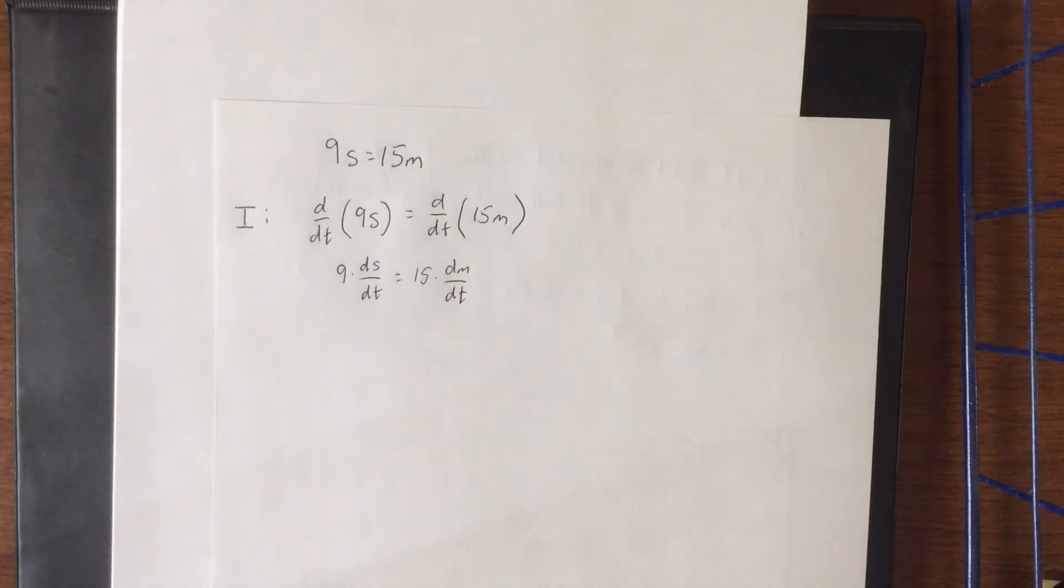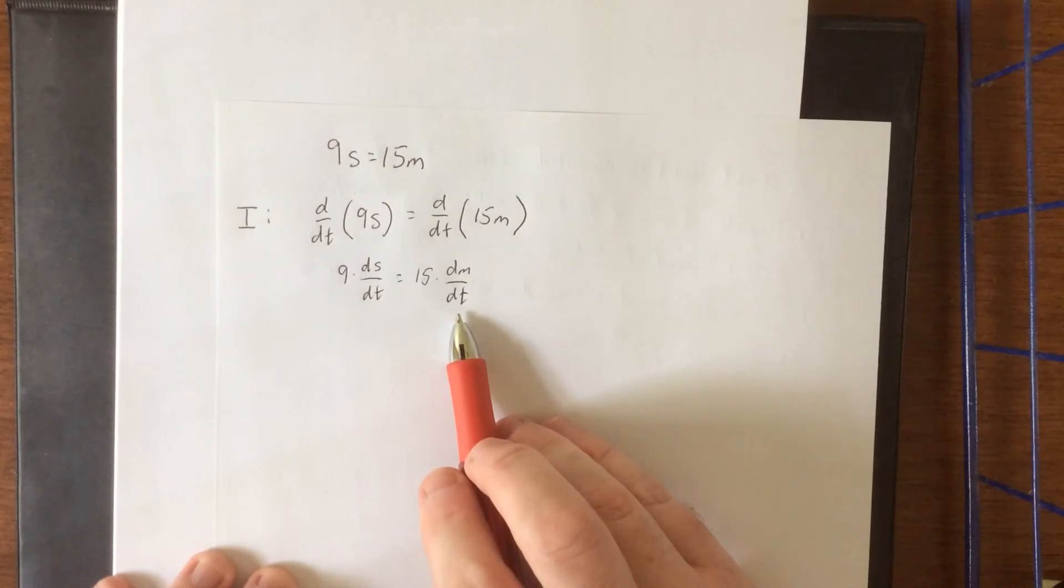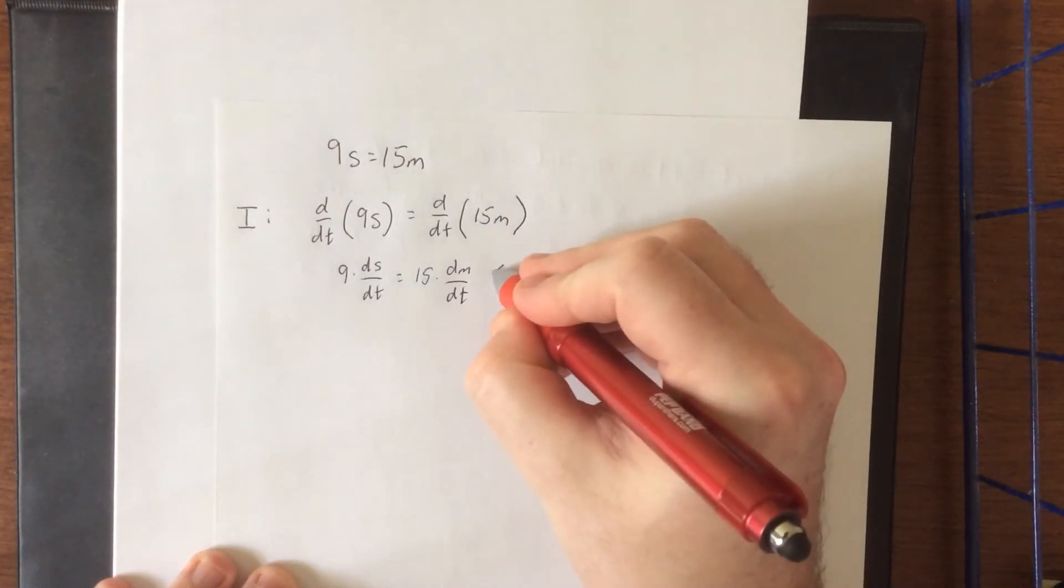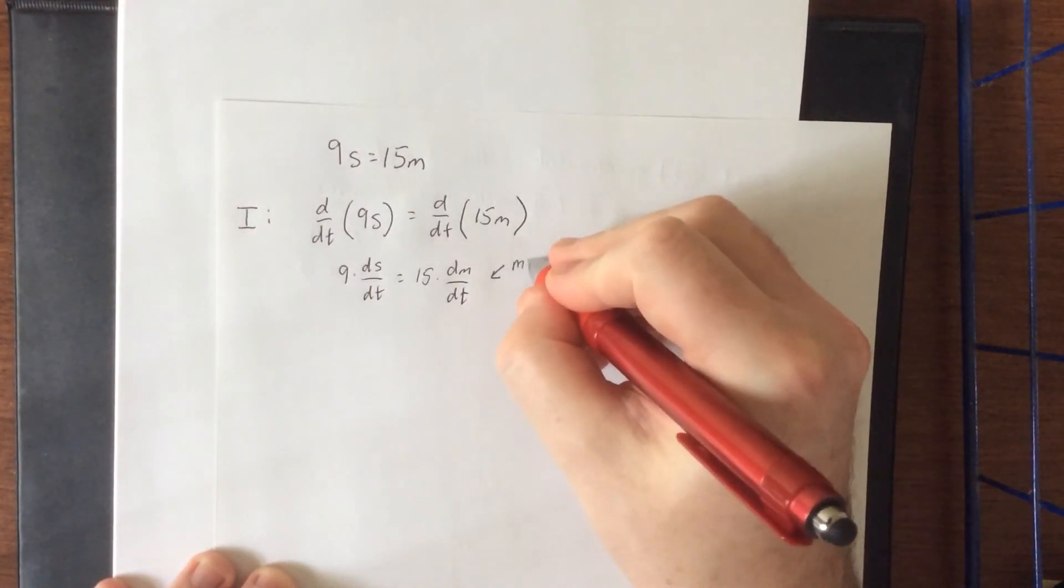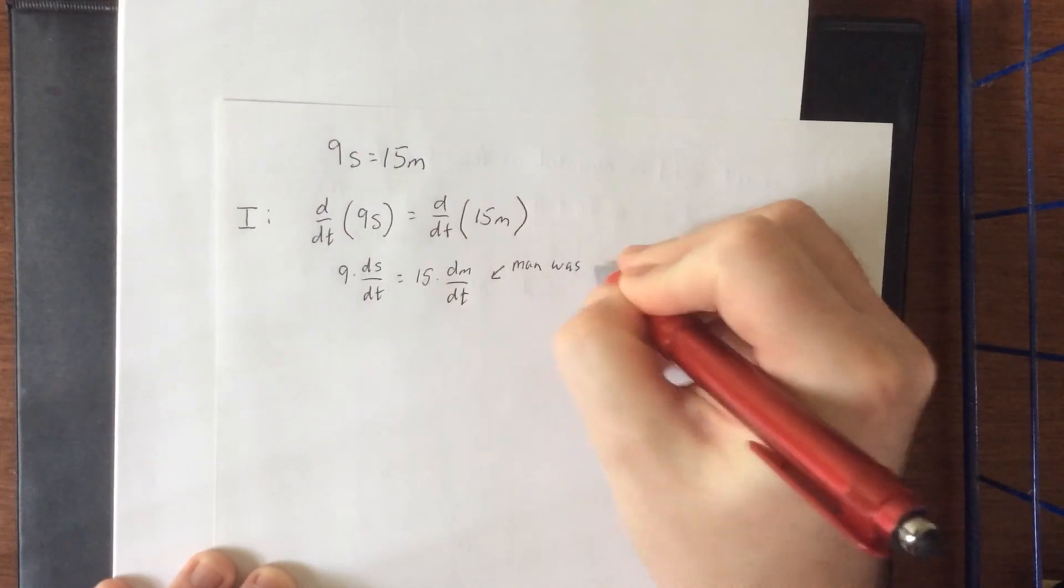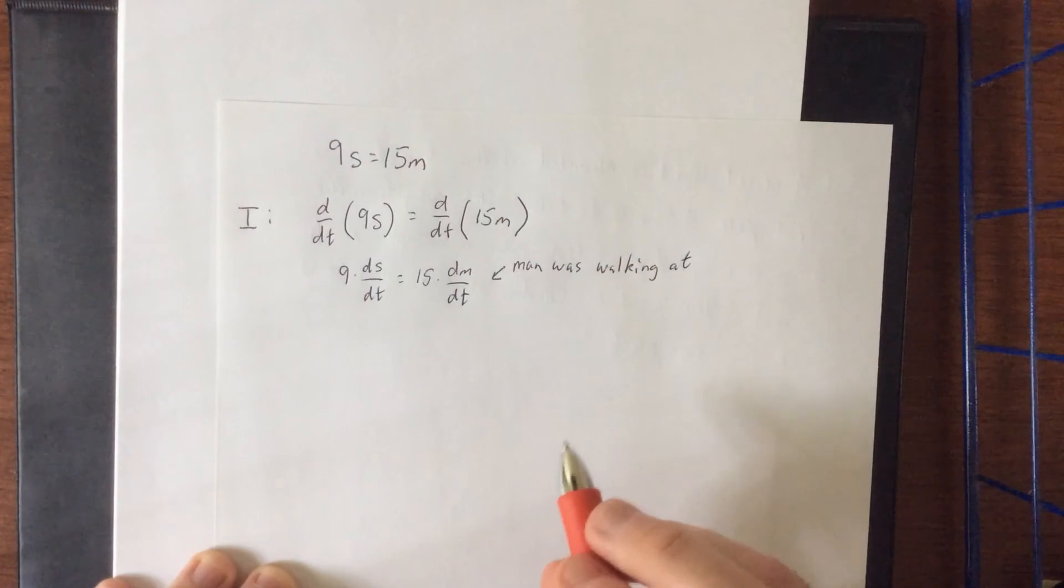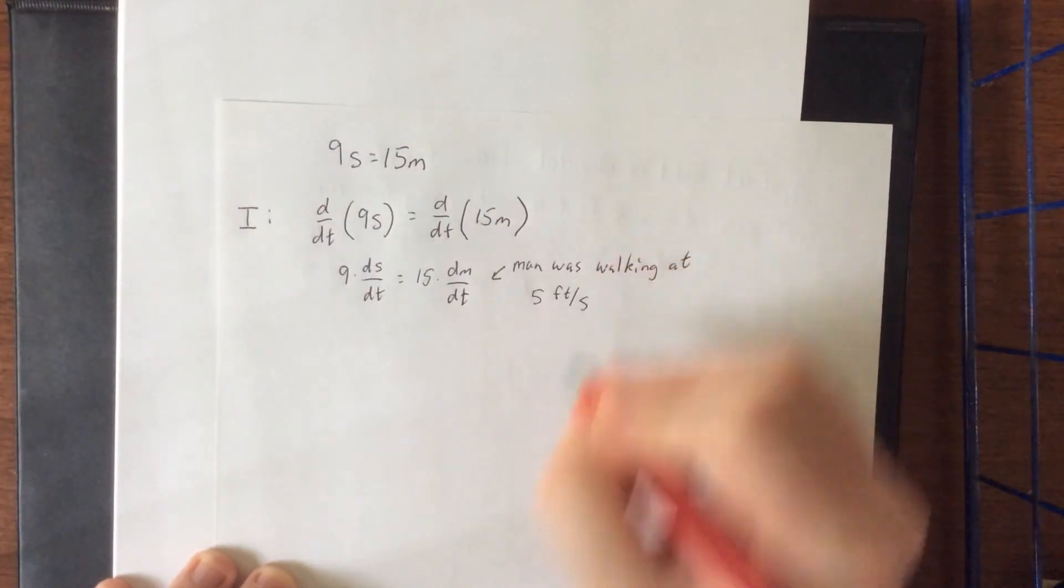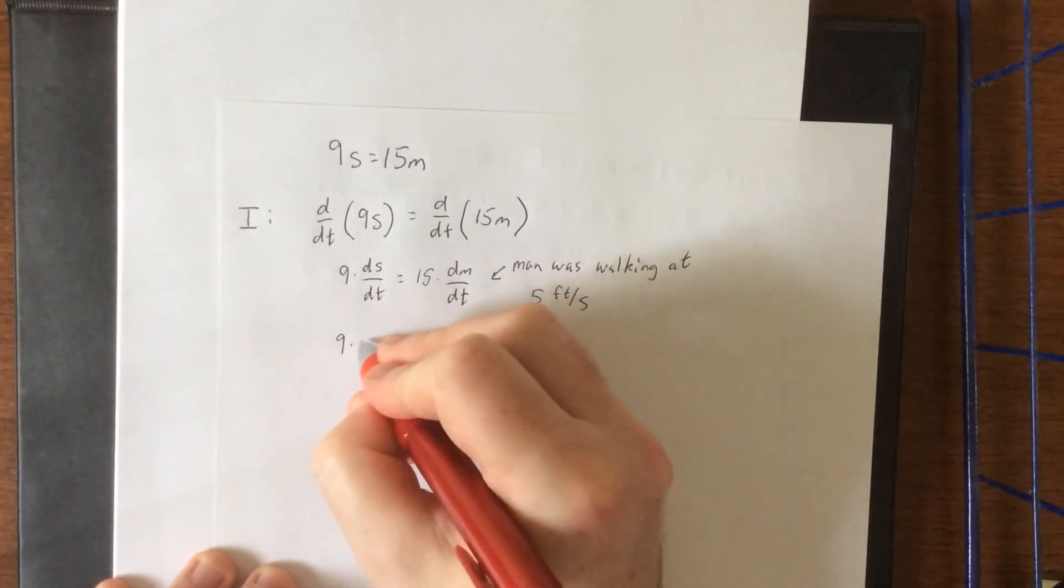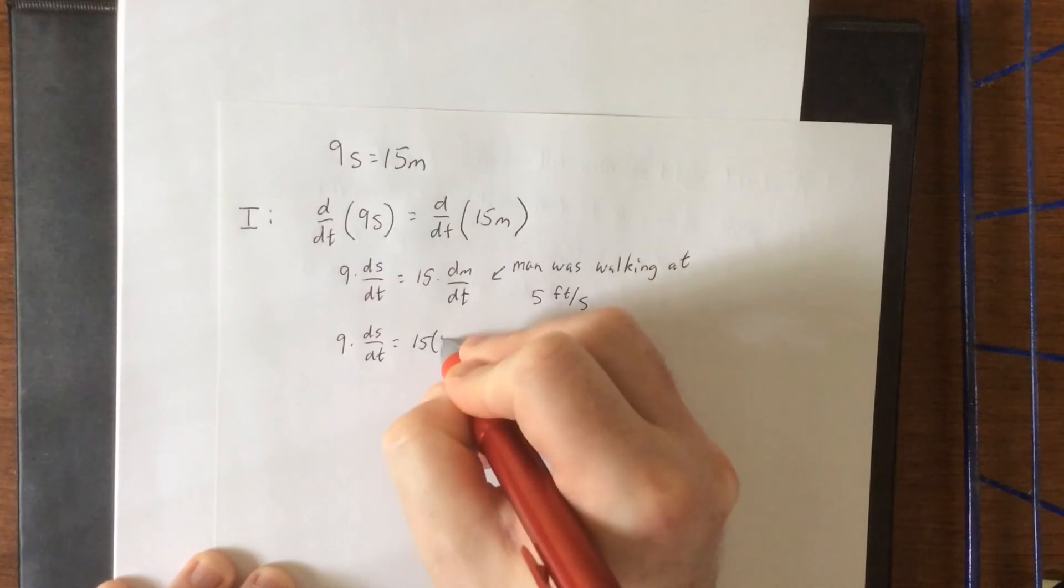Now, recalling what these actually represent, dS/dt is the speed of the shadow, and that's what we're trying to find. That means that we should have a quantity that we can plug in for here. So this represents the rate of change of the position of the man with respect to time. So we'll point out the man was walking at 5 feet per second. So let's go ahead and plug in 5. So this will be 9 times dS/dt is equal to 15 times 5.